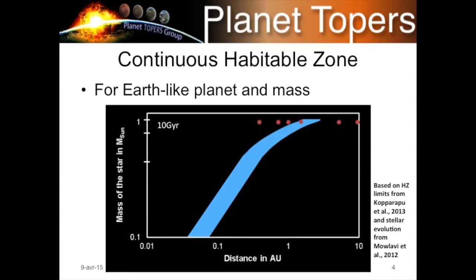We've already seen pictures of the habitable zone before. This example is calculated for an Earth-like planet based on limits recently published by Kopparapu et al. Different models based on different databases can shift the habitable zone slightly, but just take this as a reference habitable zone for this presentation.